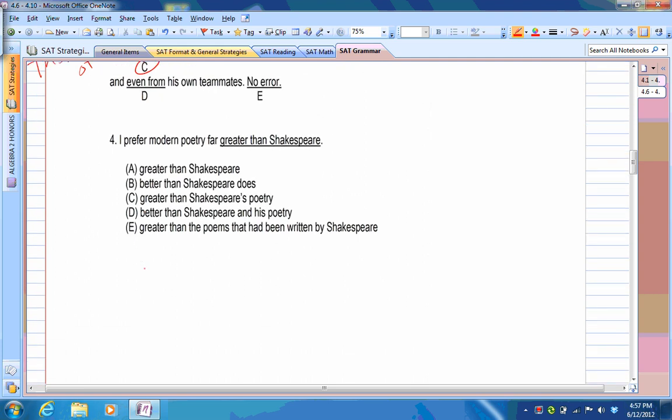Then for number four, again we have a problem. I prefer modern poetry far greater than Shakespeare. Well Shakespeare is a person. So I prefer modern poetry far greater than Shakespeare's poetry. That's how I do that one. So that would be C.